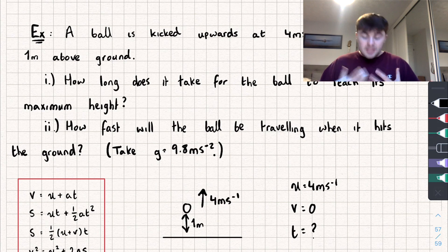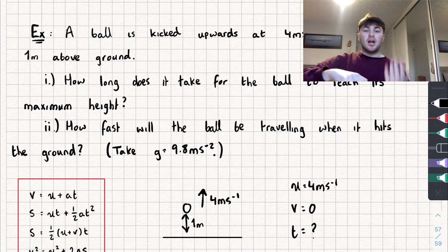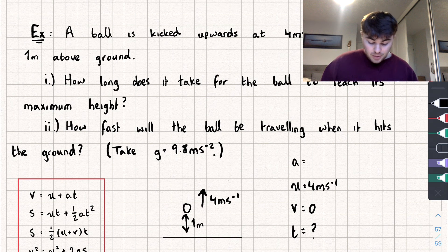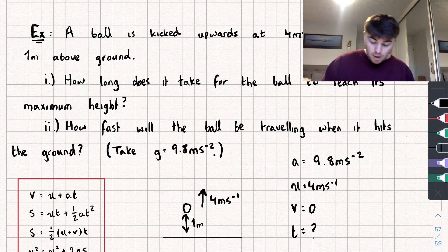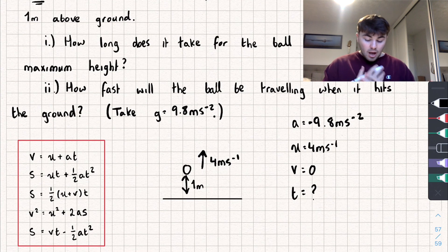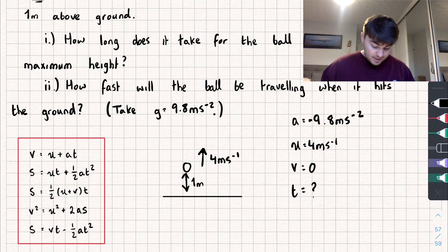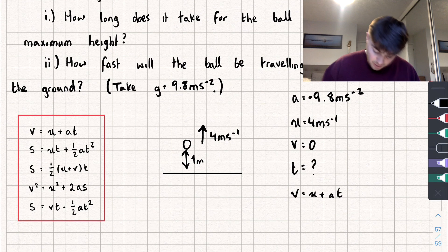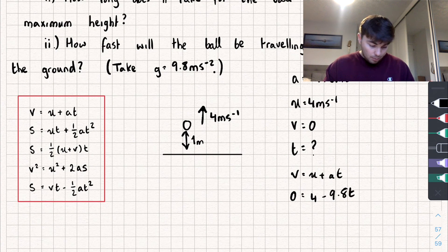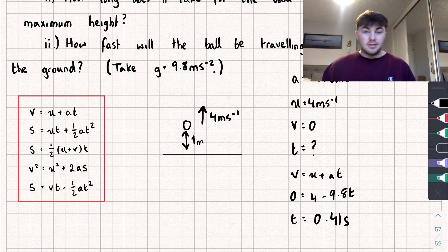I've taken upwards as positive, but gravity acts downwards, so the acceleration is −9.8 m/s². We have u, v, a, and t — we don't need s — so we use v = u + at. Substituting: 0 = 4 − 9.8t, which rearranges to t = 4 ÷ 9.8 = 0.41 seconds to two decimal places. That's how long it takes to reach its maximum height.